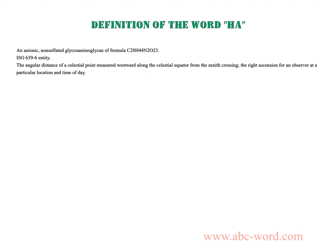ISO 639-6 entity. The angular distance of a celestial point measured westward along the celestial equator from the zenith crossing, the right ascension, for an observer at a particular location and time of day.